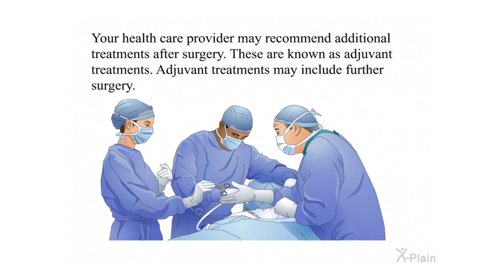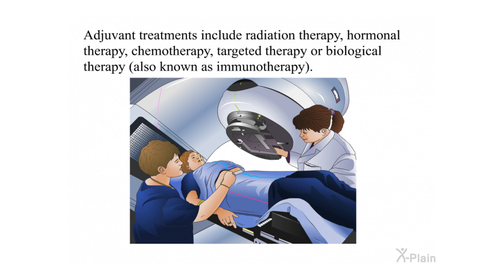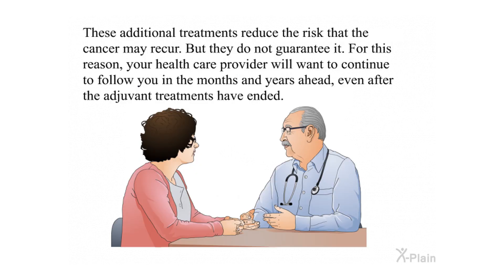Your health care provider may recommend additional treatments after surgery, known as adjuvant treatments. Adjuvant treatments may include further surgery, radiation therapy, hormonal therapy, chemotherapy, targeted therapy, or biological therapy, also known as immunotherapy. These additional treatments reduce the risk that the cancer may recur, but they do not guarantee it. For this reason, your health care provider will want to continue to follow you in the months and years ahead, even after the adjuvant treatments have ended.